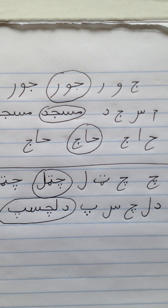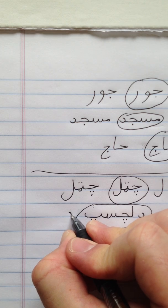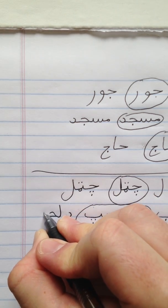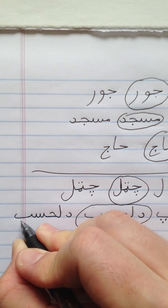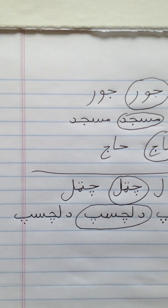Let's do that one one more time. DAL, LAM, CHE, SEEN, PAY, and add the dots. DALCHASP, interesting.